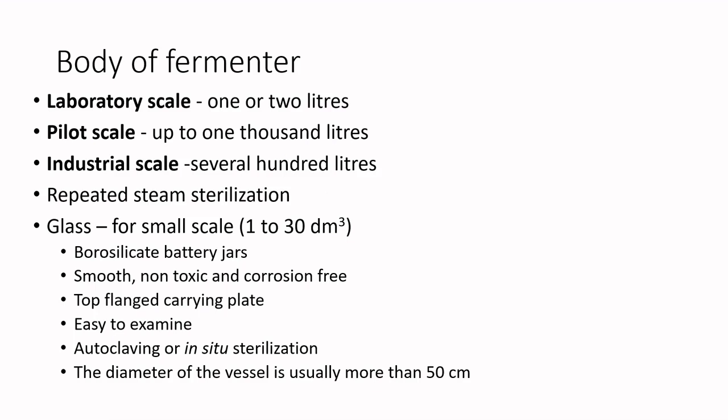So based on hazard level and genetic engineering status, we assign different containment levels for each organism. That concludes the discussion on containment. Now I will talk about the body of the fermenter — what materials we use to construct fermenters at different scales. Laboratory-scale fermenters are small, typically 1 to 50 liters. Pilot-scale reactors may hold 100 to 1000 liters. Industrial-scale fermenters have several hundred liter capacity. For all scales, the fermenter must resist repeated steam sterilization using high-pressure steam.